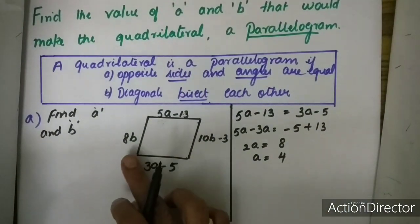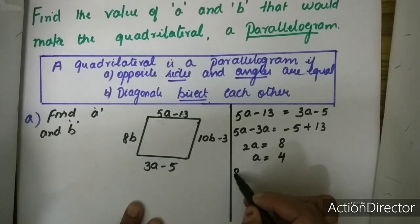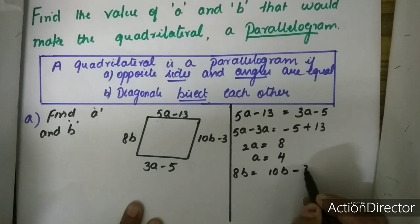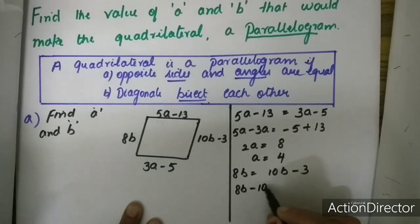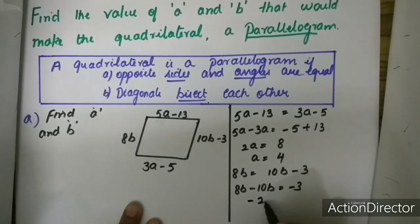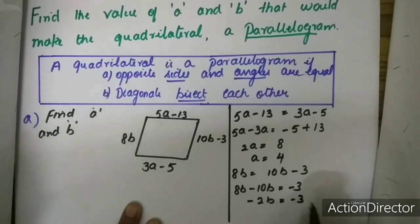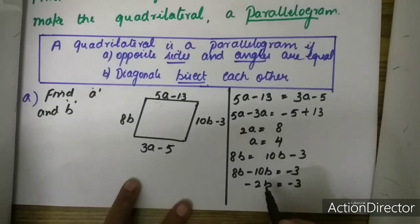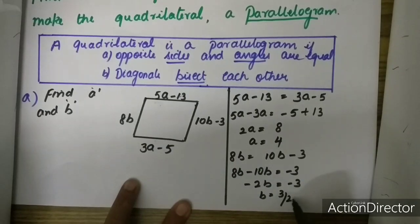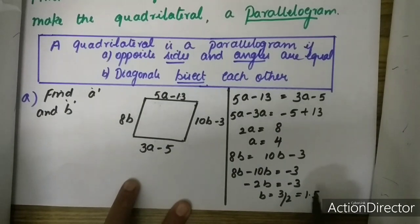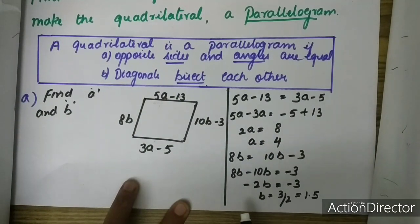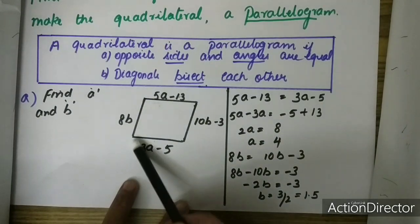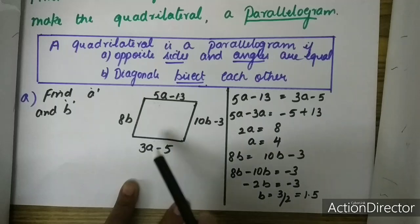Similarly, taking the other two sides: 8B is equal to 10B minus 3. Bringing B to the other side: 8B minus 10B is equal to minus 3, or minus 2B is equal to minus 3, or B is equal to 3 upon 2, which is equal to 1.5. So we can say when A is equal to 4 and B is equal to 1.5, this quadrilateral will become a parallelogram.